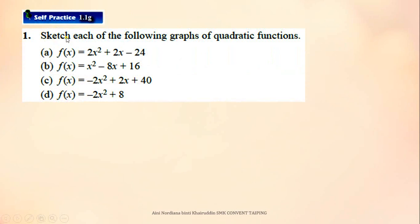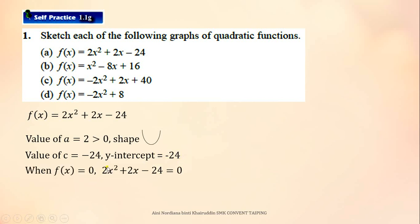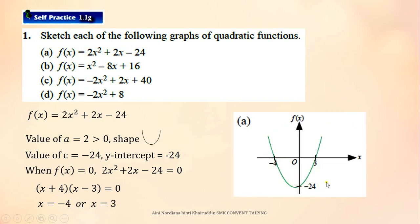Question number 1: Sketch each of the following graphs of quadratic functions. For A, first write the function. The value of A is 2, which is greater than 0, so we will get a U-shape graph. The value of C is negative 24, so the y-intercept is negative 24. When f(x) equals 0, factorize to get the values of x, which are negative 4 and 3. So, you will sketch the graph like this.